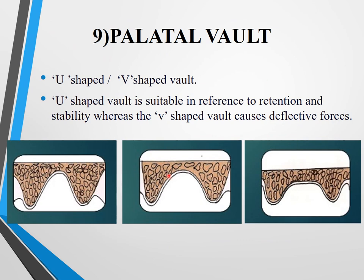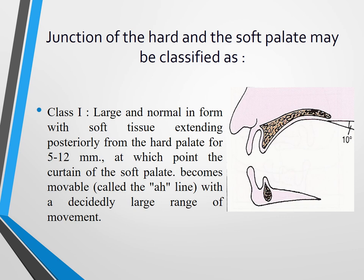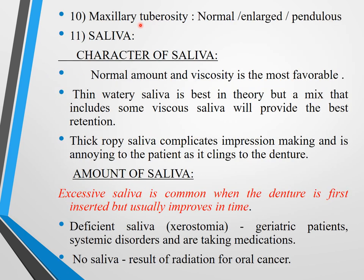Palatal vault shape — also called the hard palate curvature — can be U-shaped, rounded, or V-shaped. The U-type is most suitable for retention and stability, while the V-shape causes deflective forces making retention very difficult. This is also important when recording the posterior palatal seal (PPS) for maxillary denture retention.